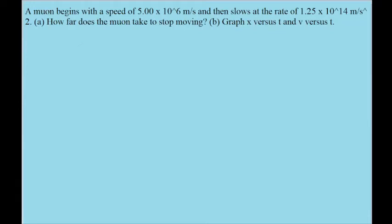In this problem, we have a particle that is moving at some speed that's given to us, and then it slows at an acceleration that is also given to us. Part A of the problem asks us how long it takes for the muon to stop moving, in other words for its velocity to reach zero.